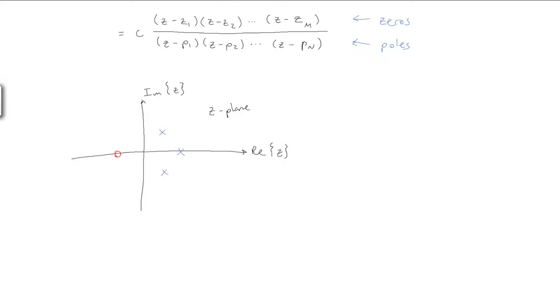let's look at the mathematical form of the Z-transform. The Z-transform of H of n is the summation of H of n times Z to the minus n. As we mentioned, Z equals R e to the j omega.